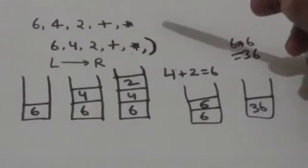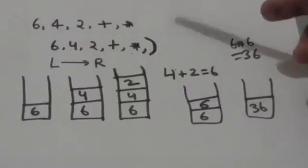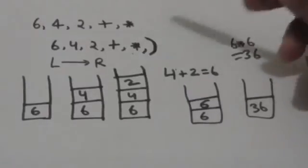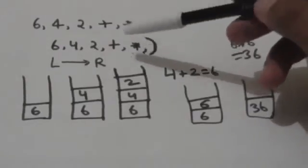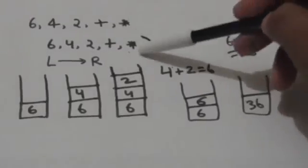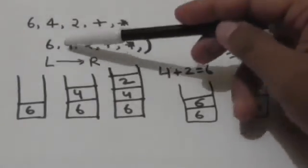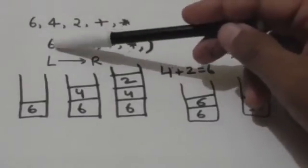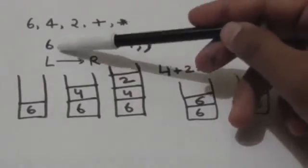For example, consider this expression written in postfix notation. Here, the star is an operator symbol which represents the multiplication operation. First of all, add a right parenthesis at the end of this expression.